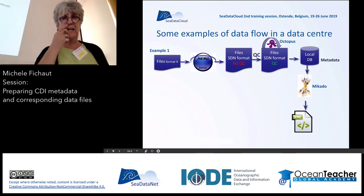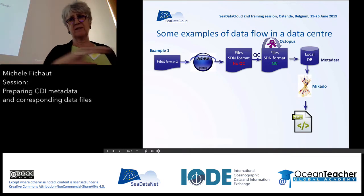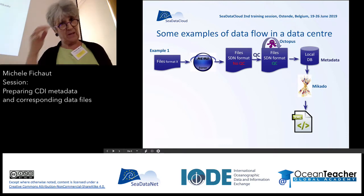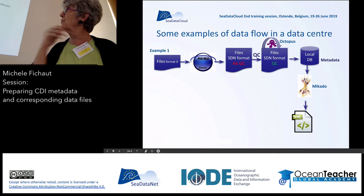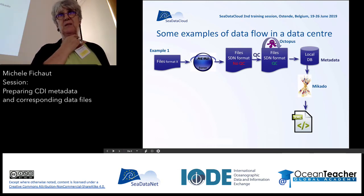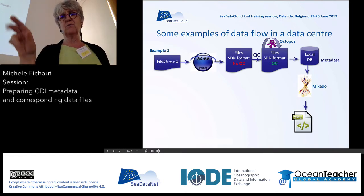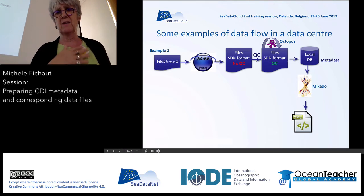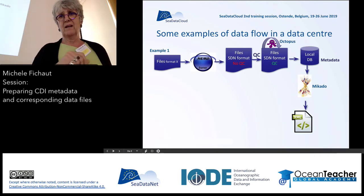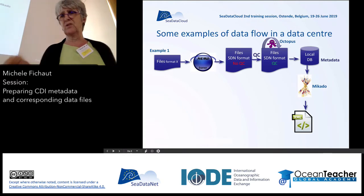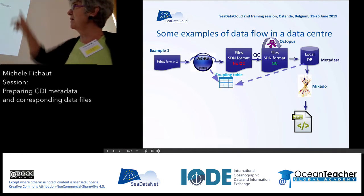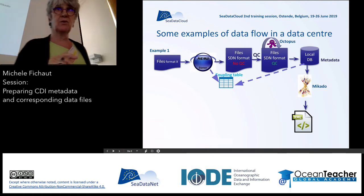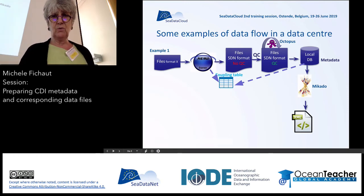I will give some examples of data flows from the data received at your data center to CDItanet catalogs. In one example, you receive files in ASCII format, use Nemo to convert them to CDItanet format with no QC initially, then QC the file with your own tool or with Ocean Data View. At the end, you have CDItanet format with valid QC flags. You then run Octopus to check that the files are correct, and if you have a local database with metadata, you generate the XML file using Mikado. The coupling table can be generated by Nemo or stored in your local database, depending on how you have organized your data flow.